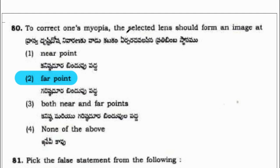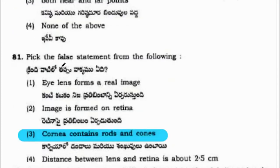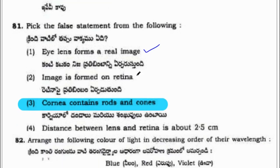First question: to correct one's myopia, the selected lens should form an image at a certain point. Pick the false statement from the following. Eye lens forms a real image — this is a correct statement. Image is formed on retina — also correct. Cornea contains rods and cones — this is a false statement. Distance between lens and retina is about 2.5 cm — also correct. So the correct option for this question is 3.